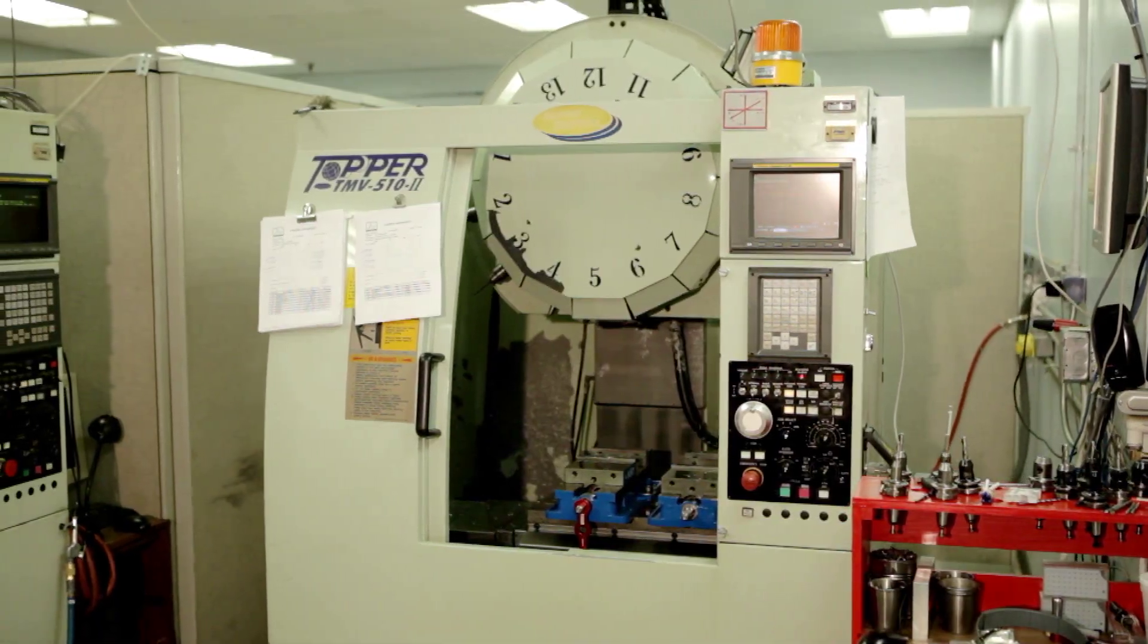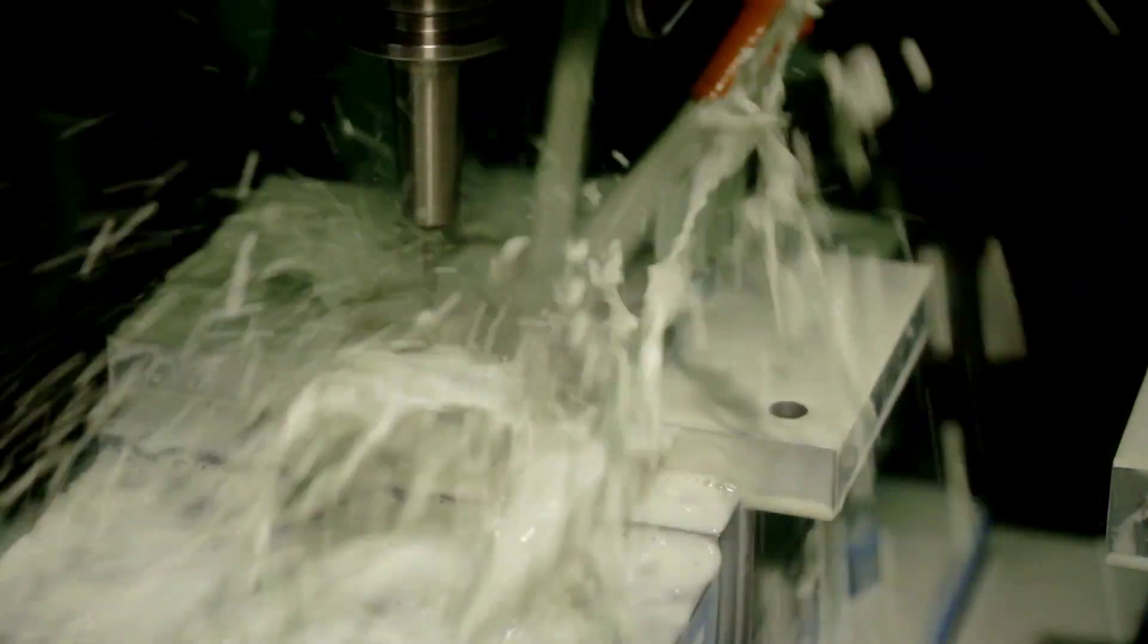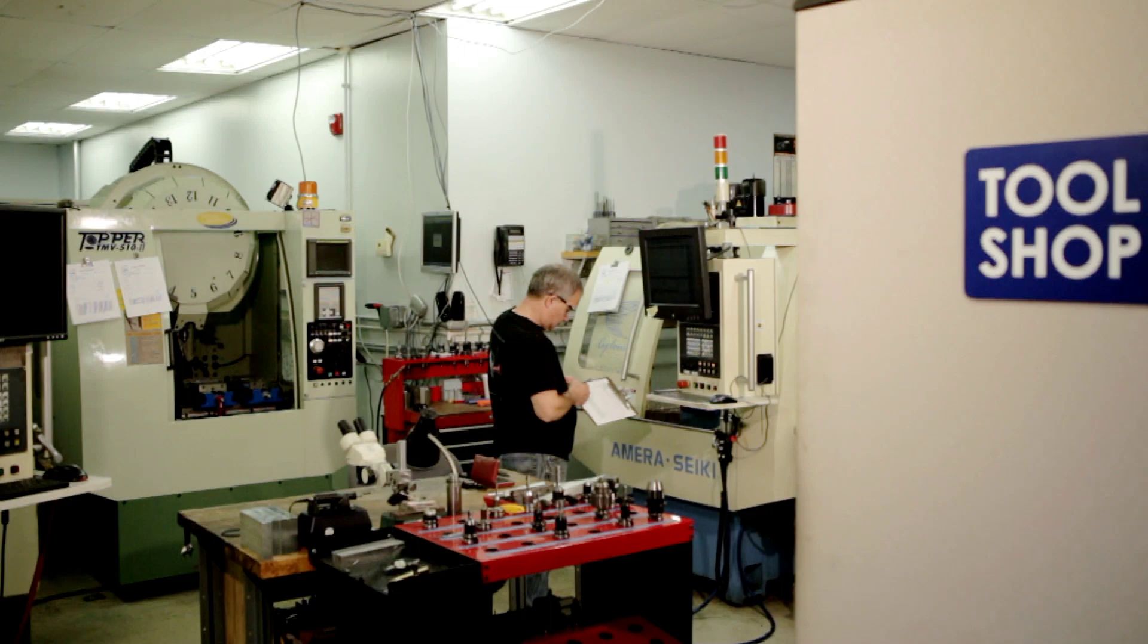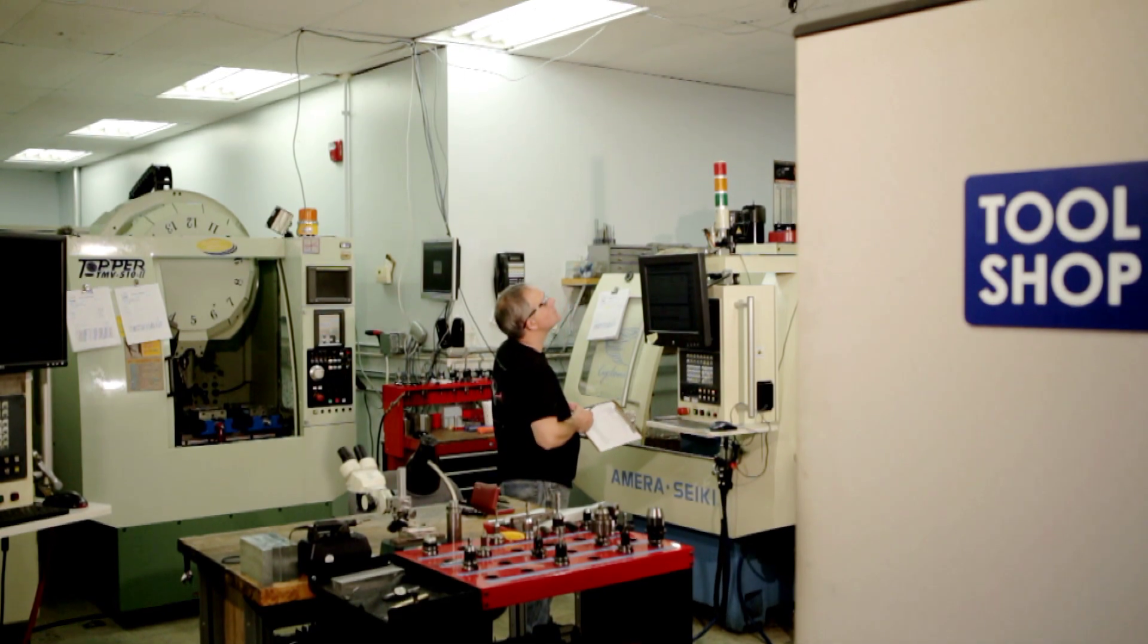I'm here in the tooling center where Albright's production begins. Behind me are four CNC machines that create the prototype tooling to mold Albright Technologies' silicone parts.